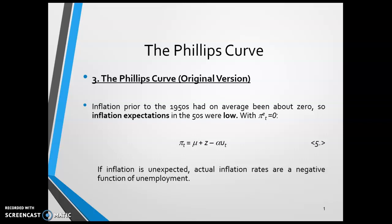In terms of a model, prior to the 1970s, expected inflation would have been zero. This changes our dynamic version of the aggregate supply curve to: inflation equals μ + z minus α times u_t. In other words, if inflation is unexpected, actual inflation rates in any given year are only a negative function of unemployment.